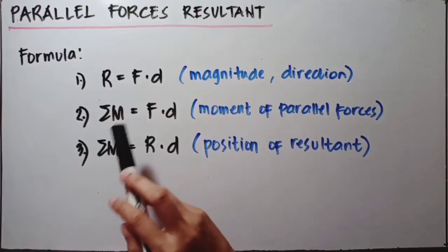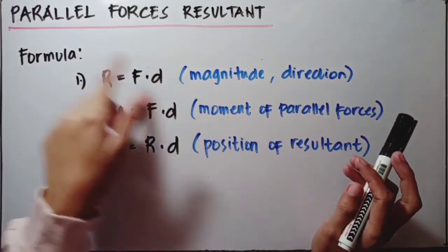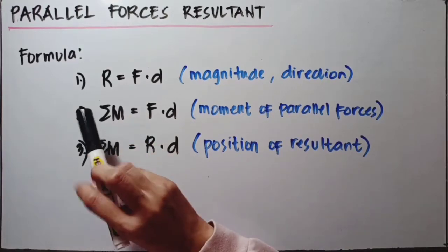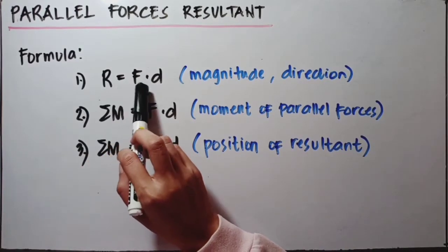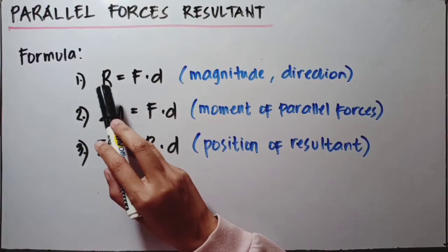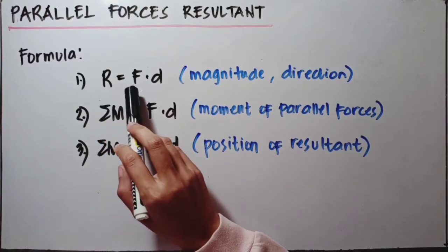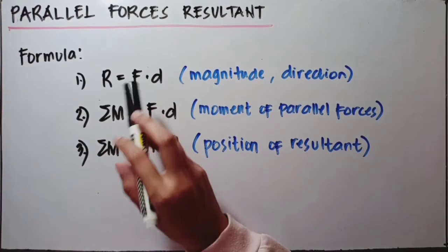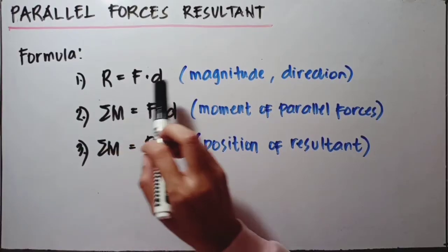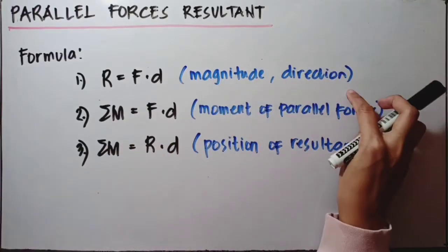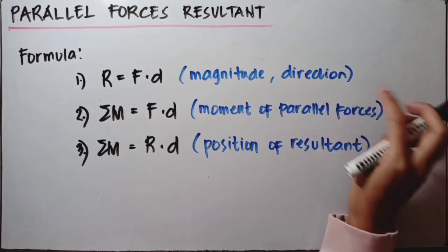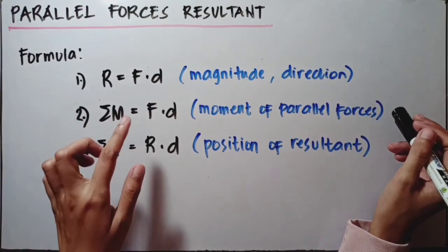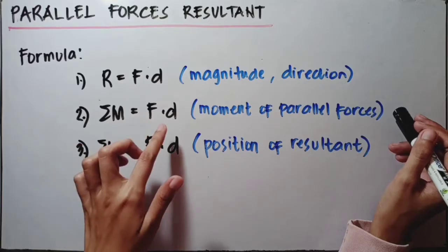We'll use these formulas to solve for the resultant of parallel forces. The first formula is R equals the summation of forces — the resultant equals the sum of all forces times distance, or the moment arm. We'll use this to solve for the magnitude and direction of the resultant. The second formula is the summation of moments, which equals force times distance.